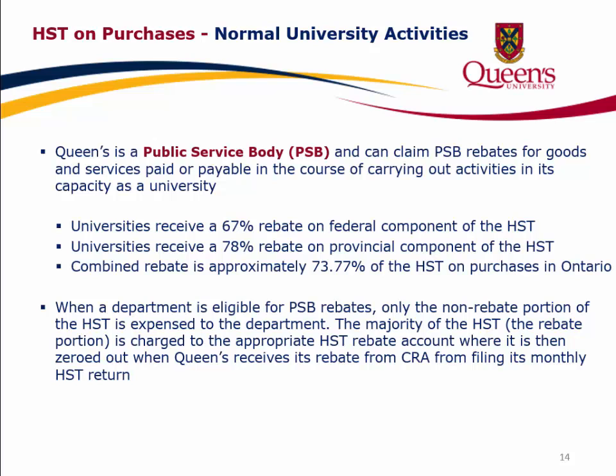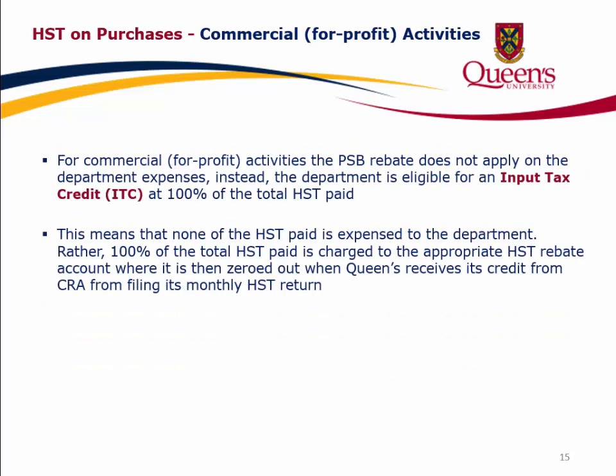For commercial for-profit activities, the PSB rebate does not apply. Instead, the department is eligible for an input tax credit (ITC) at 100% of the total HST paid, meaning none of the HST paid is expensed to the department. Rather, 100% of the total HST paid is charged to the appropriate HST rebate account, where it is zeroed out when Queen's receives its credit from CRA upon filing its monthly HST return.